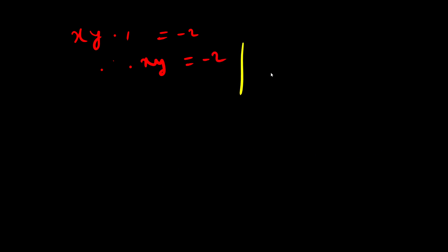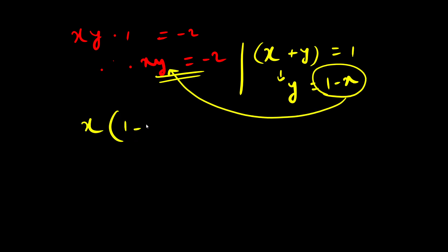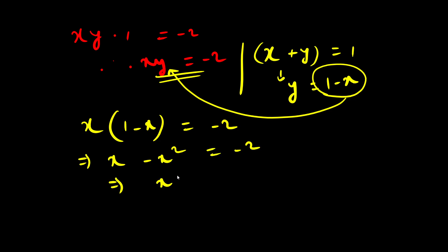So finally we have two relations: xy = -2 and x + y = 1. Using these two we can find both x and y. I can rewrite y as 1 - x and substitute this in place of y. So I get x(1 - x) = -2, which gives x - x² = -2. Rearranging, we get x² - x - 2 = 0, which is a simple quadratic equation.